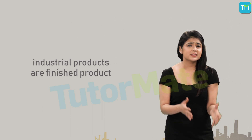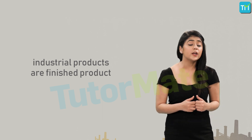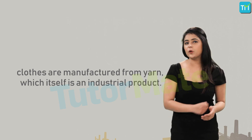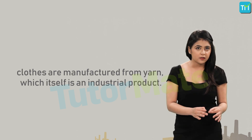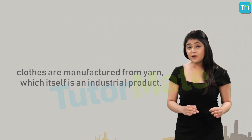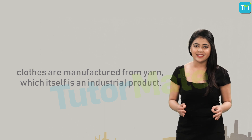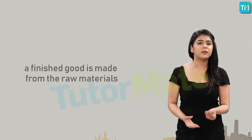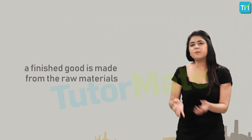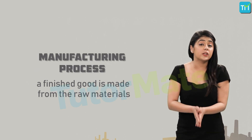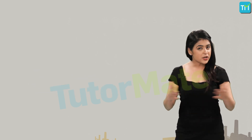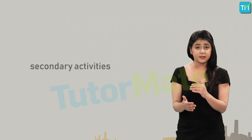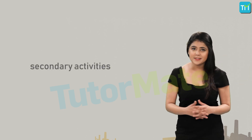Manufacturing has another aspect too, where sometimes industrial products themselves are used to produce a finished product. For example, clothes are manufactured from yarn, which itself is an industrial product. This process where a finished good is made from raw materials is basically what a manufacturing process is, and generally people employed in secondary activities are engaged in this process.